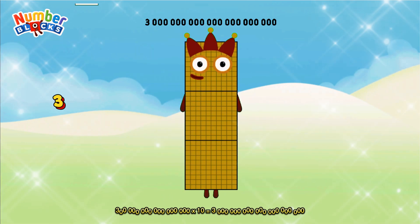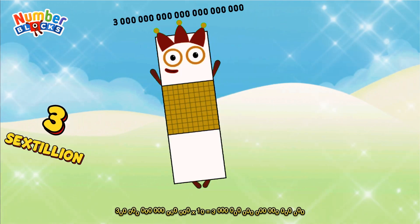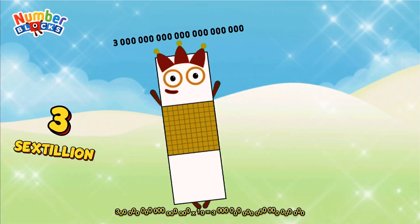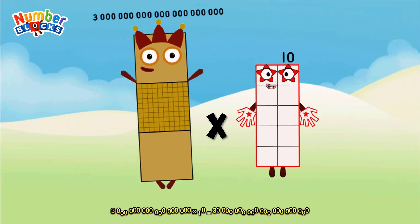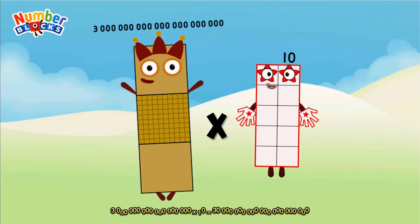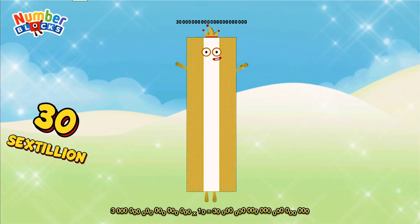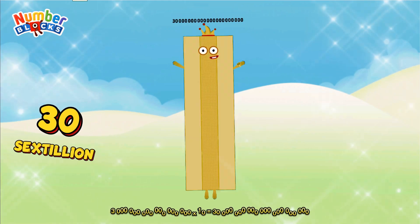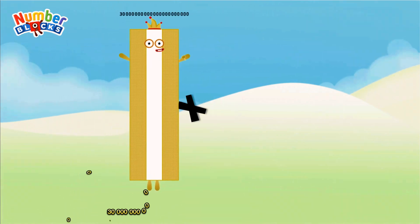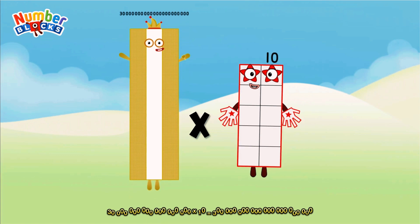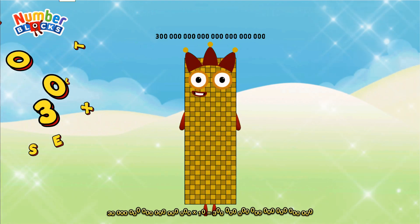Equals 3 sextillion. 300 quintillion multiplied by 10 equals 30 sextillion. 30 sextillion multiplied by 10 equals 300 sextillion.